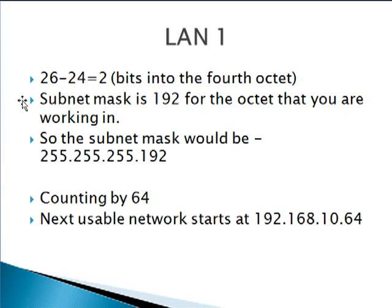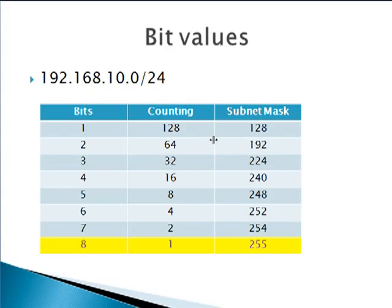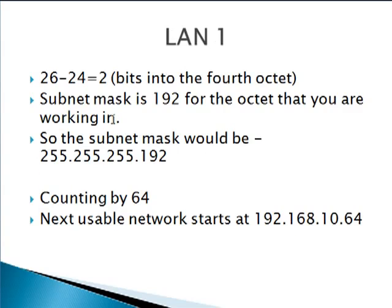To find what you're counting by: 26 is our subnet mask and the classful subnet mask is 24, so that gives us 2 bits — we are 2 bits into the 4th octet. As shown on the cheat sheet, 2 bits in gives us a subnet mask of 192 in the 4th octet, and we'll be counting by 64. So the other 3 octets are all 255 because of the /24. We're counting by 64 because we're 2 bits into the 4th octet, so your next usable network starts at 192.168.10.64.